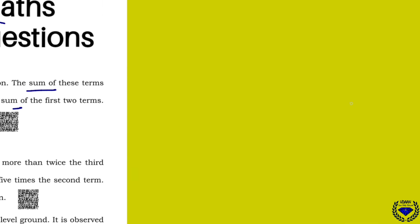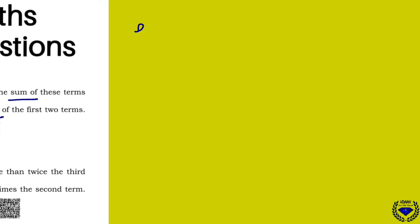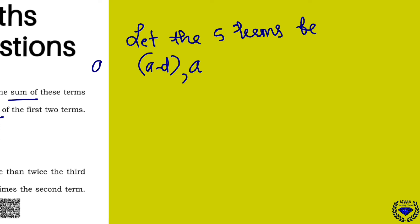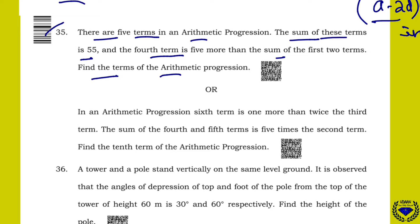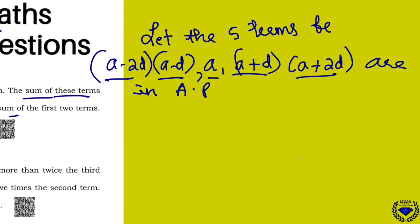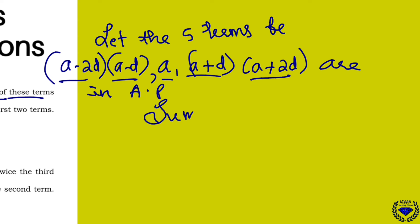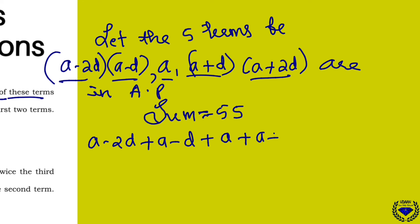Whenever they give 5 terms, remember this: let the 5 terms be A minus 2D, A minus D, A, A plus D, A plus 2D.